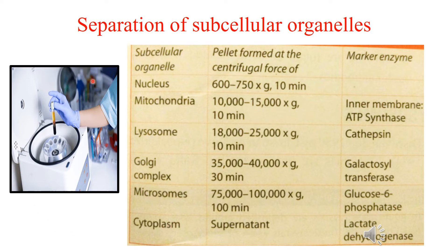Each cell organelle has a marker enzyme that confirms correct isolation. The marker enzyme for the mitochondrial fraction is ATP synthase; for the lysosomal fraction it is cathepsin; for the Golgi complex it is galactosyl transferase; for microsomes it is glucose-6-phosphatase; and for the supernatant it is lactate dehydrogenase, indicating the presence of cytoplasm.